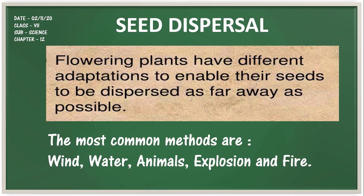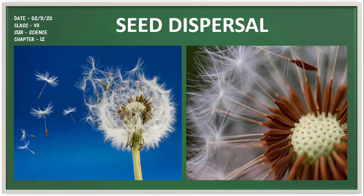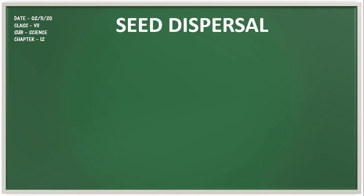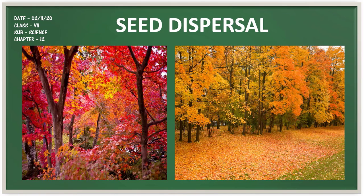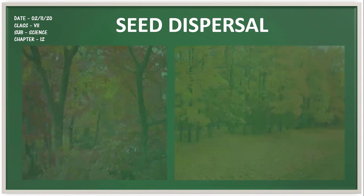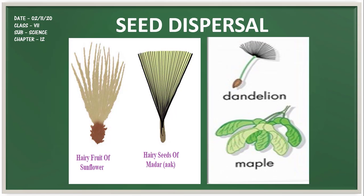Wind dispersal: you may have blown on a dandelion head and watched seeds float away. Some plants like coriander and maple trees have winged seeds that flutter to the ground. With wind dispersal, seeds are blown about and land in various places; to improve chances of success these plants produce lots of seeds. Winged seeds such as those of drumstick and maple, and light seeds of grasses and hairy fruits of sunflower, get blown off with the wind to far-away places.